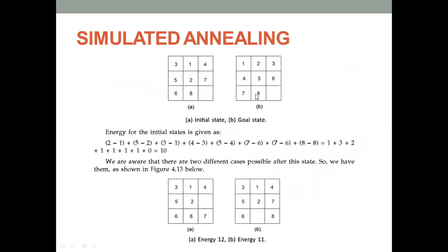Let me show an example of how the energy function can be calculated — it will be like a heuristic function. One possible basis is the 8-puzzle problem. You have an initial state, a goal state, and some intermediate state. The heuristic value is calculated by checking each element: for example, when you take the number 1, it is present at position 2 but has to be at position 1, so you calculate 2 minus 1. When you take the number 2, it is at position 5 but has to be at position 2. You calculate for each variable where it has to be and where it is present, subtracting the values to get the energy value — similar to the heuristic function in A-star and AO-star algorithms.